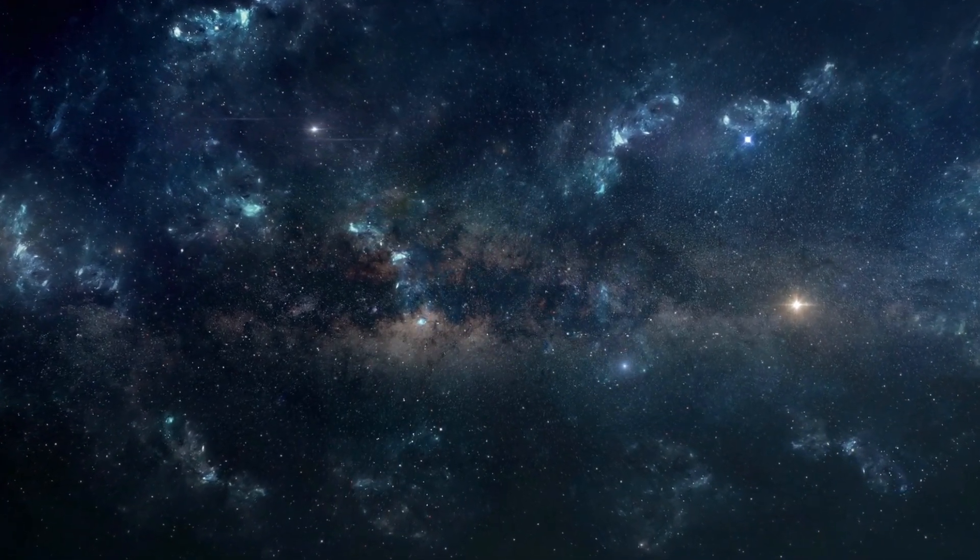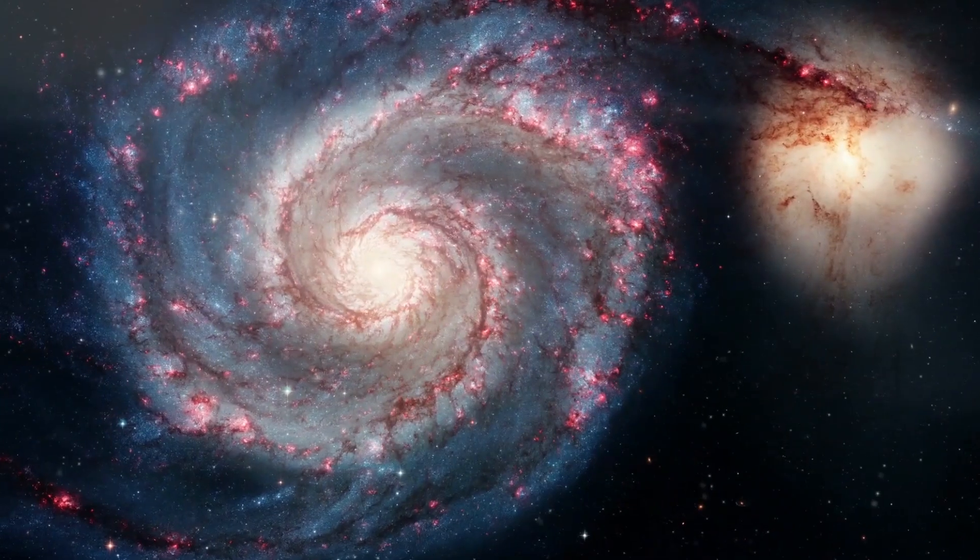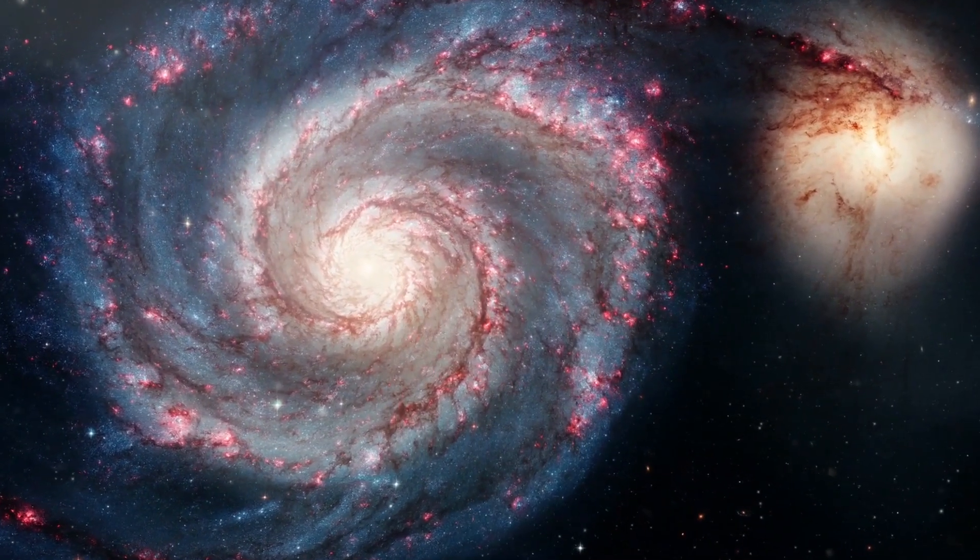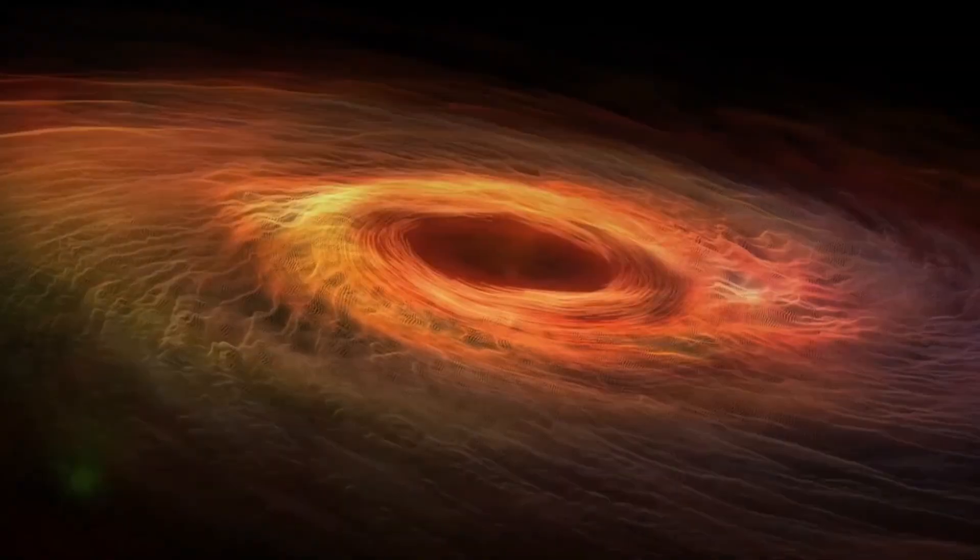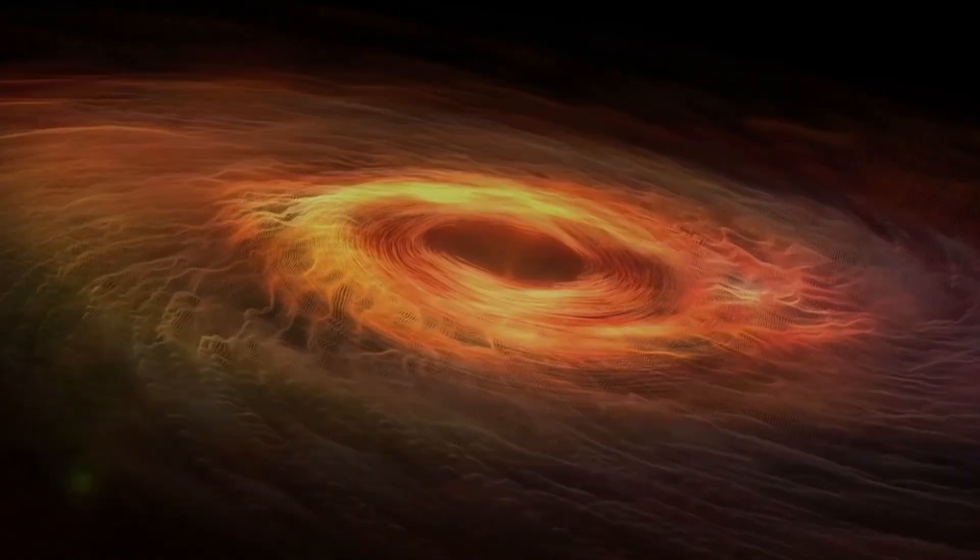Dark matter makes up over 80% of all the matter in the universe, but it doesn't directly interact with light in any way. It just floats around being massive, affecting the gravity within galaxies.